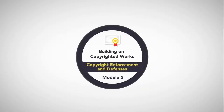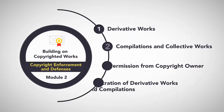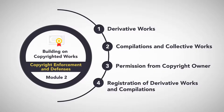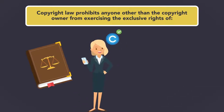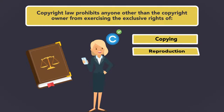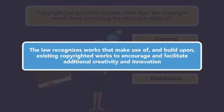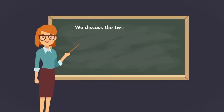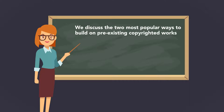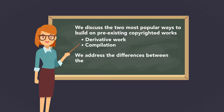Module 2: Building on Copyrighted Works. Copyright law prohibits anyone other than the copyright owner from exercising the exclusive rights of copying, reproduction, adaptation, and distribution. But the law recognizes works that make use of and build upon existing copyrighted works to encourage and facilitate additional creativity and innovation. In this module, we discuss the two most popular ways to build on pre-existing copyrighted works: a derivative work and a compilation. We address the differences between the two and the steps required to creating each.